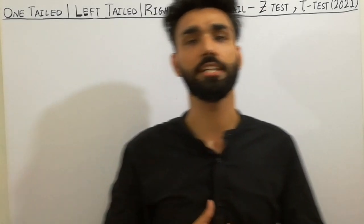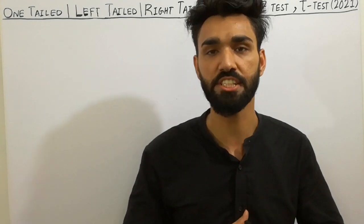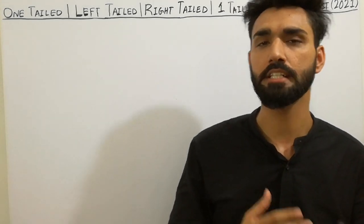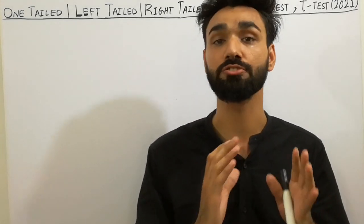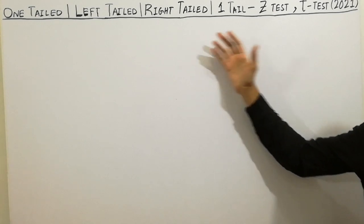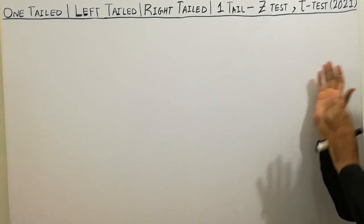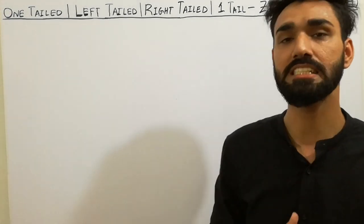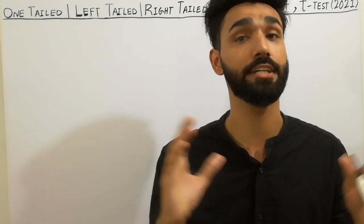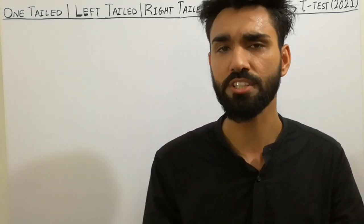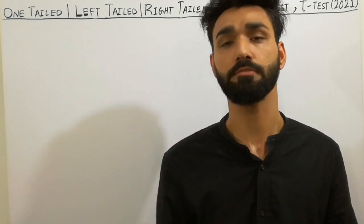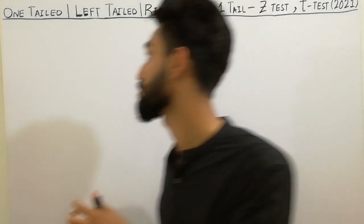Hello friends, welcome to my YouTube channel AI International Academy. Today I am going to discuss the shortcuts, secrets, tricks and concepts about one tail — what is left tail and right tail, and what is two tail — about z-test and t-test. I will also discuss checking the z-test and t-test in hypothesis testing by using a diagram. Must watch this lecture from start to end and don't skip any steps.